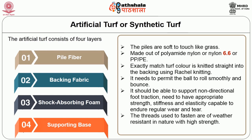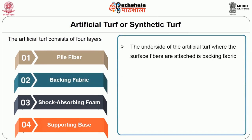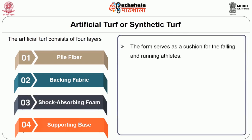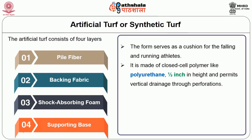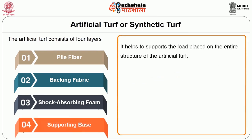The threads used to fasten are to have weather resistance with high strength. Backing fabric is the inside of the artificial turf where the surface fibers are attached; it should readily permit free water flowing through the fabric. The shock absorbent foam serves as a cushion for the falling and running athlete. It is made of closed cell polymers like polyurethane, half an inch in height, and permits vertical drainage through perforations. The supporting base helps to support the load placed on the entire structure of the artificial turf.